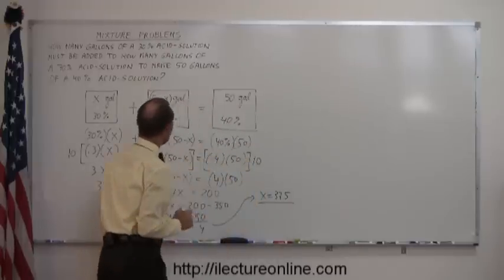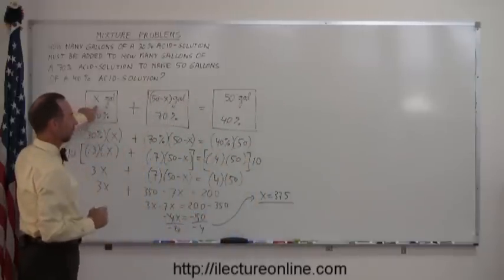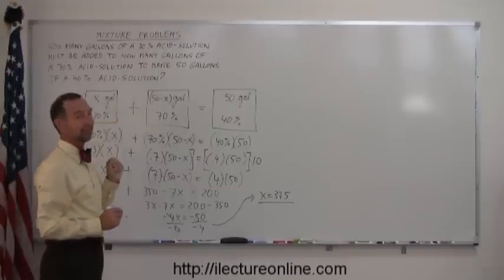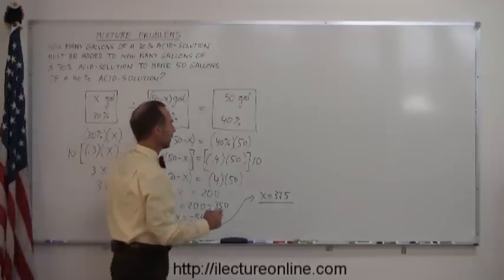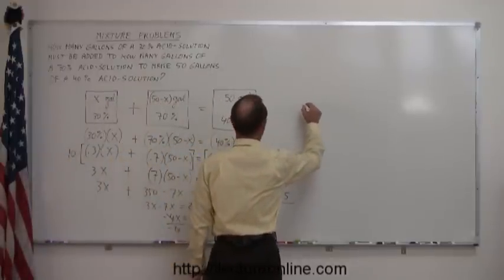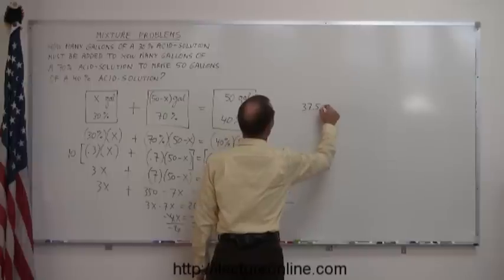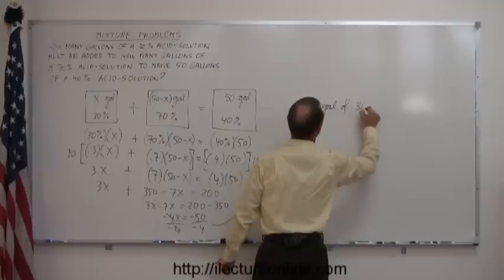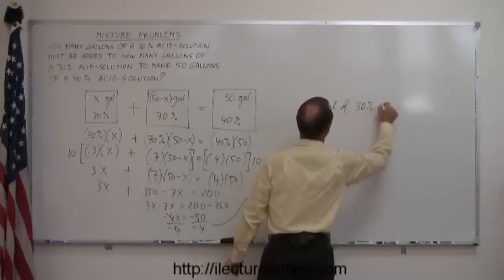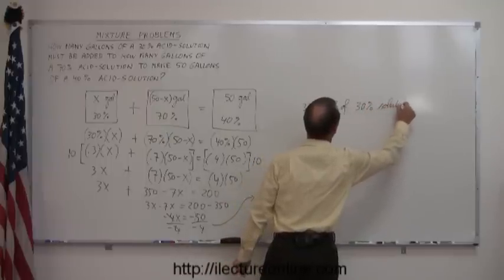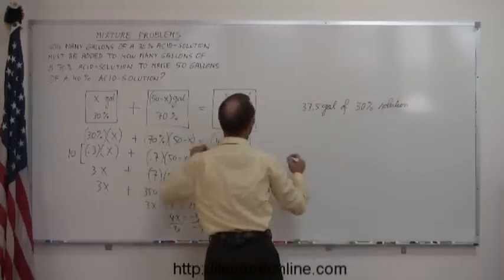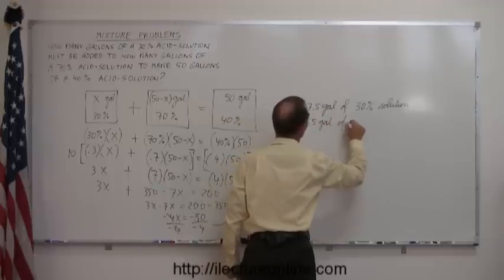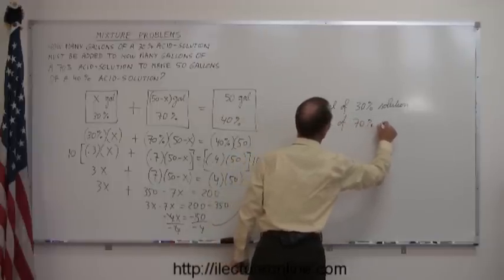So, that tells me that I need 37 and a half gallons of this solution and 50 minus 37 and a half, which is 12 and a half, of this solution. So, the answer is we need 37.5 gallons of the 30% solution. And we need 50 minus that, which is 12.5 gallons of 70% solution.